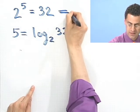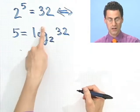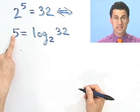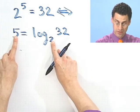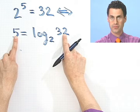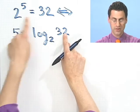So these two things are identical. Let's check. A log is the exponent - the exponent I have to raise 2 to in order to get 32. So 2 to the fifth equals 32. That checks.